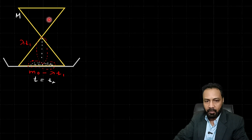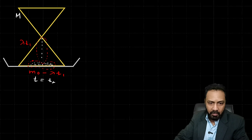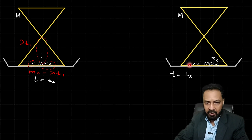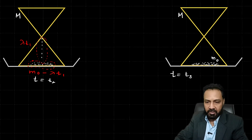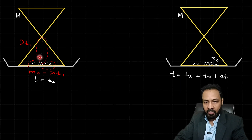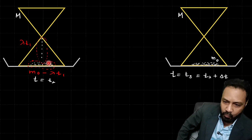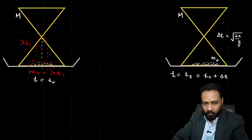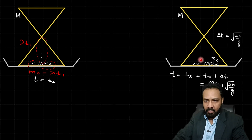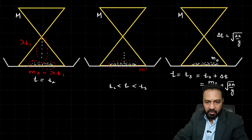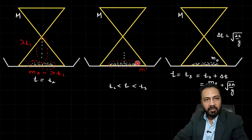Now consider t₂, the moment when the upper reservoir is just emptied. The moment t₃ is when all sand particles have landed on the floor for the first time. The time interval Δt between t₂ and t₃ equals √(2h/g), since the last grain leaving the neck at t₂ takes that time to reach the floor. So t₃ = t₂ + √(2h/g) = m₀/λ + √(2h/g).